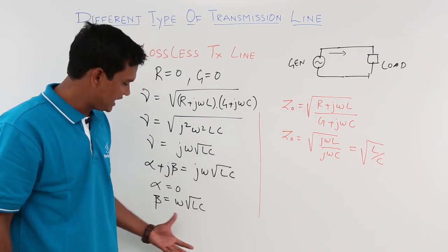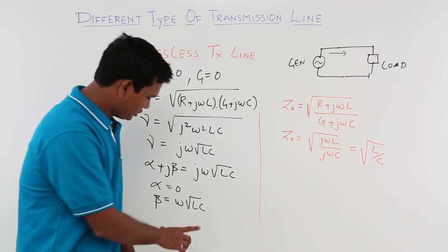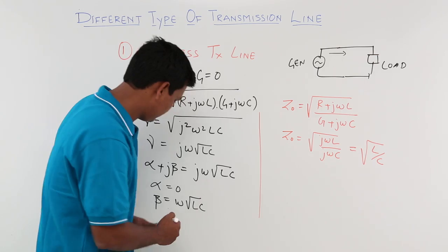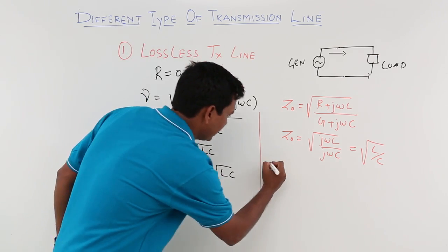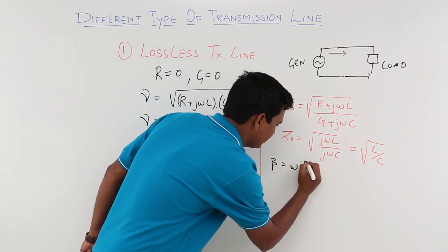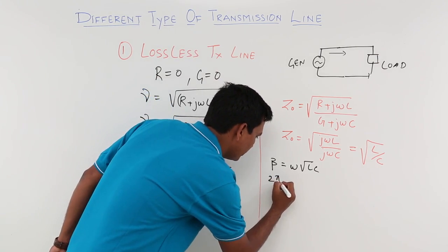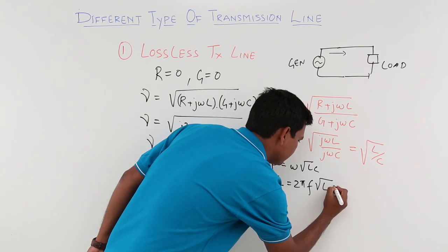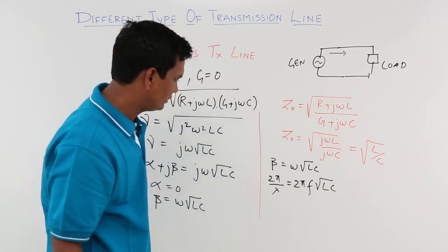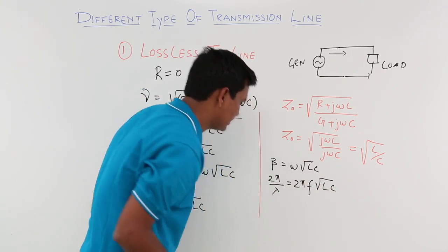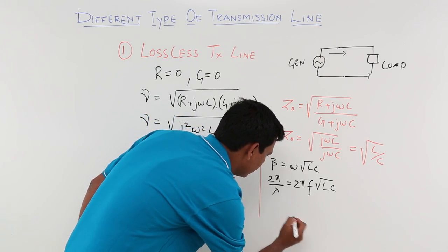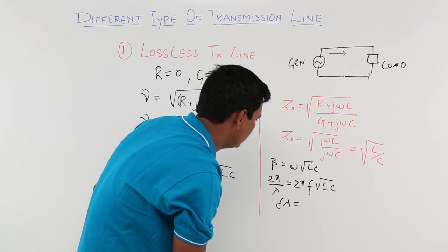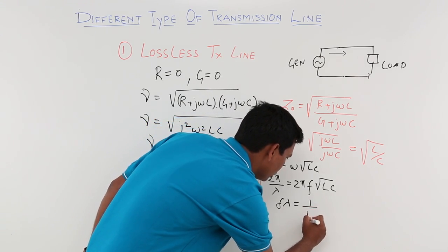Now, one more important point. We know beta is also equal to 2π/λ, and omega is 2πf. So beta = ω√(LC) becomes 2πf√(LC) = 2π/λ. The 2π terms cancel, and rearranging gives f·λ = 1/√(LC).